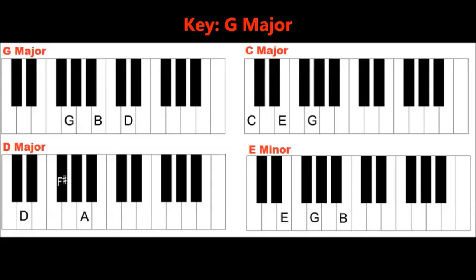The four basic chords in the key of G are G, C, D, and E minor.